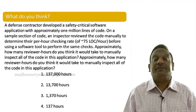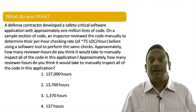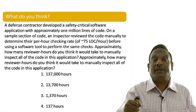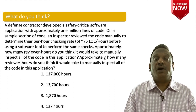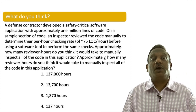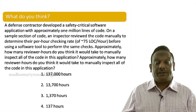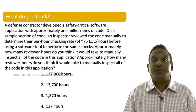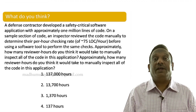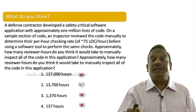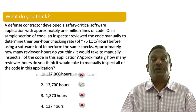Approximately how many reviewer hours would it take to manually inspect all of the code? You have 4 options: 137,000 hours, 13,700 hours, 1,370 hours, or 137 hours. The answer is simple — 1 million lines divided by 75 lines per hour equals approximately 13,700 hours.